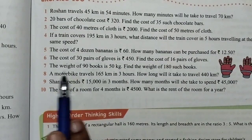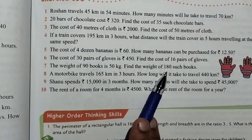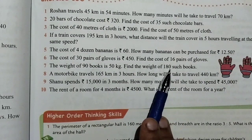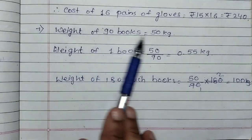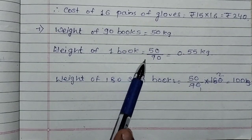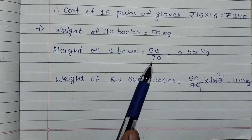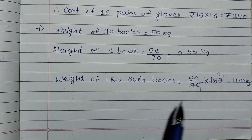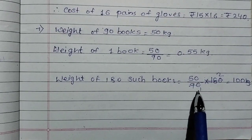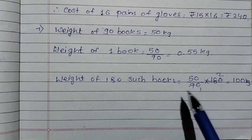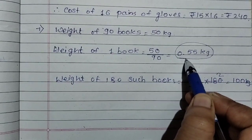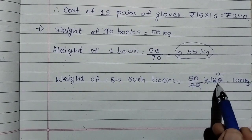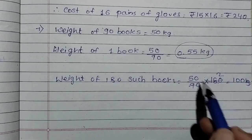Question number 7: The weight of 90 books is 50 kg. Find the weight of 180 such books. To find this, first find the weight of 1 book: 50 divided by 90. Then multiply by 180 — since 50 upon 90 into 180, the 90 cancels into 180, and 50 becomes 100. The answer is 100 kg.